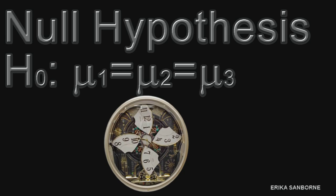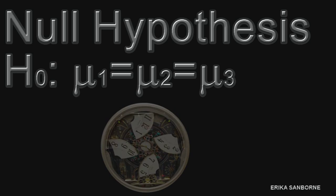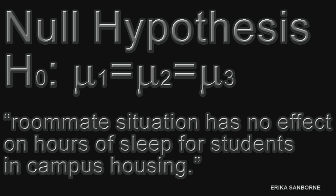The null hypothesis in symbols looks like what you see here, and in words, simply that roommate situation has no effect on hours of sleep for students in campus housing, that there's nothing going on here. If there is any significant mean difference in here at all, we are going to reject this null hypothesis.